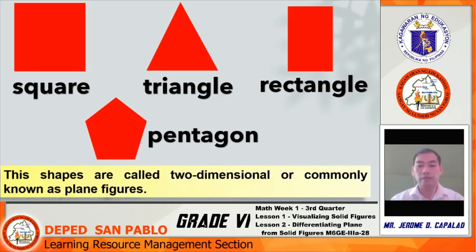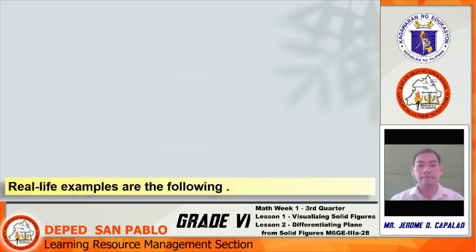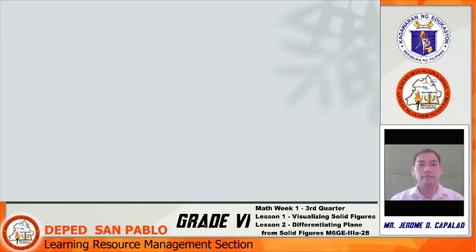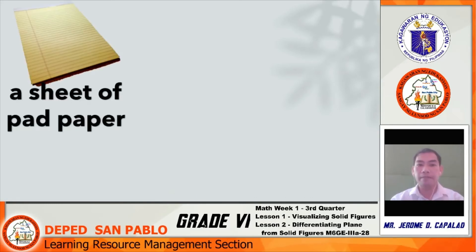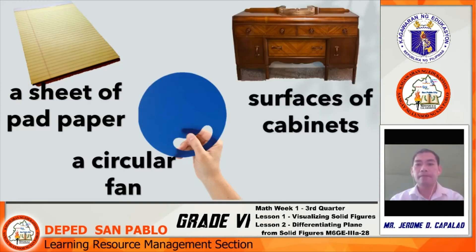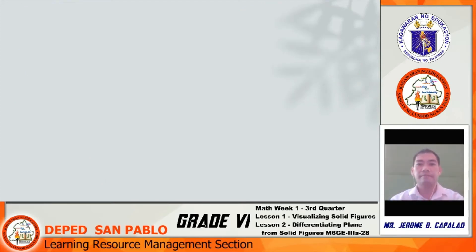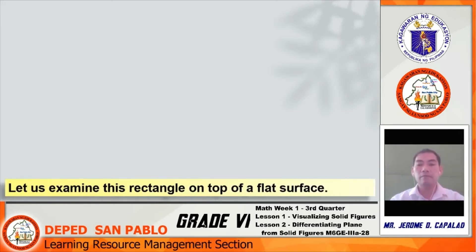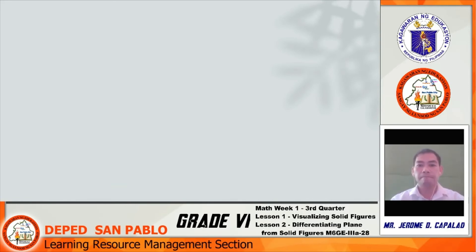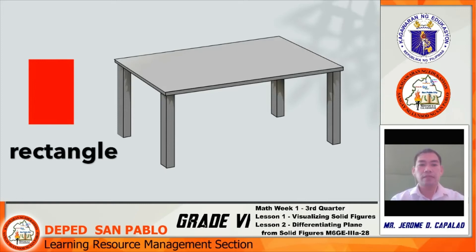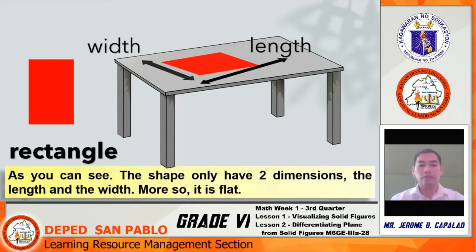These shapes are called two-dimensional, or commonly known as plain figures. Real-life examples include a sheet of pad paper, a circular fan, and the surfaces of cabinets. Let us examine a rectangle on top of a flat surface. As you can see, the shape only has two dimensions — length and width. Moreover, it is flat.